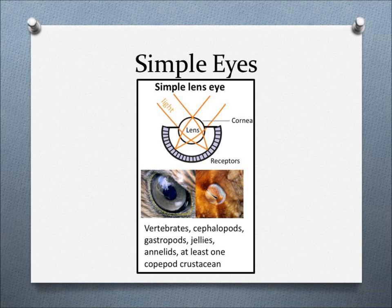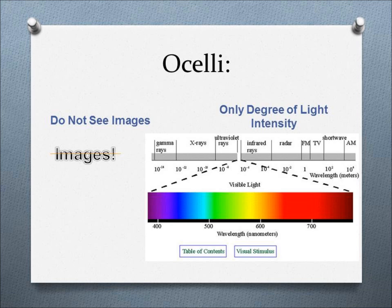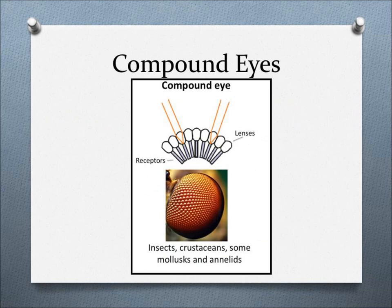Simple eyes, like the eyes that humans and cephalopods have, simply contain only one lens, hence the name simple eyes. For insects, the simple eyes are called ocelli. The ocelli are unable to see actual images, only different degrees of light intensity.